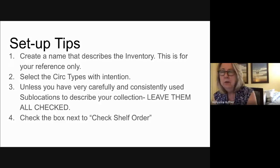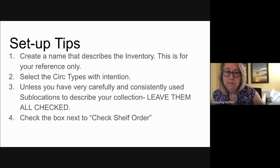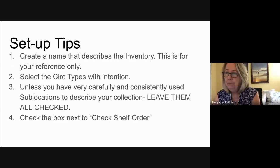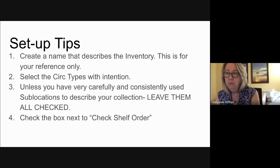You should see setup tips for inventory. Here are your first four steps. You want to create a name for your inventory that describes the area you're inventorying — this is for your future reference. You need to carefully select the circ types. Always keep this rule of thumb in mind: Destiny operates inventory by looking at two things — the call number of the item and the circ type of the item. Both have to be within the parameters for it to register as accounted for in your inventory.